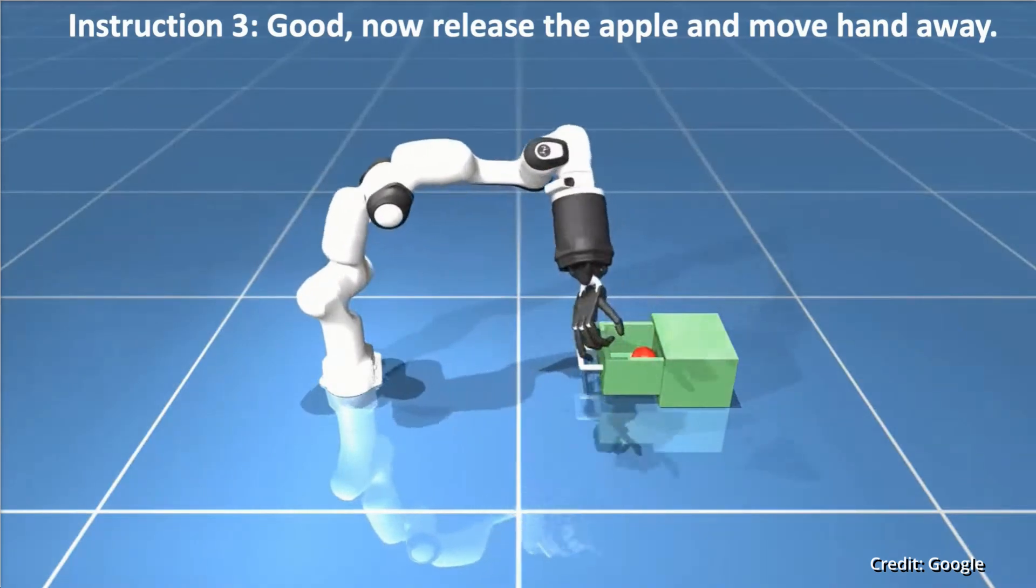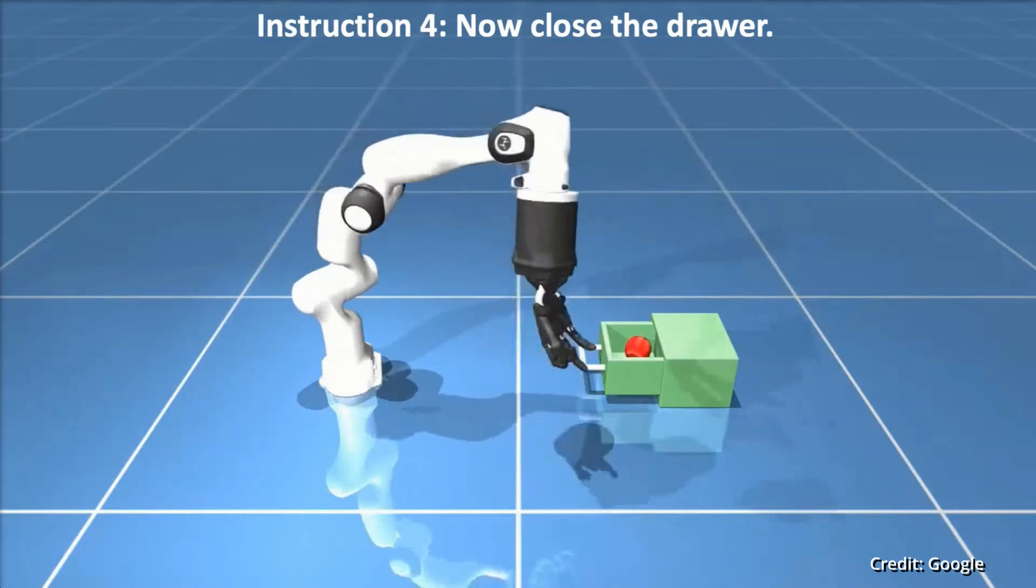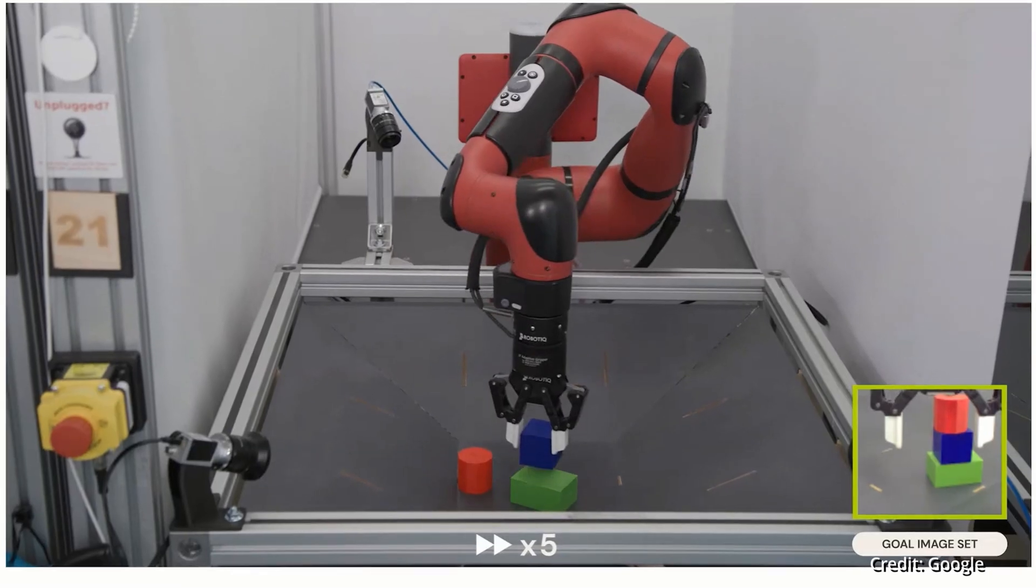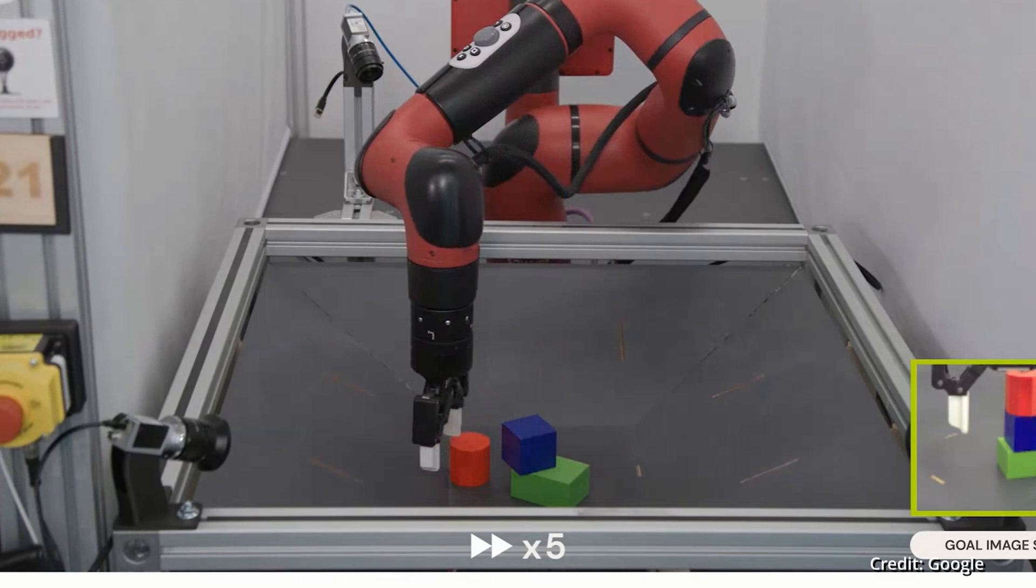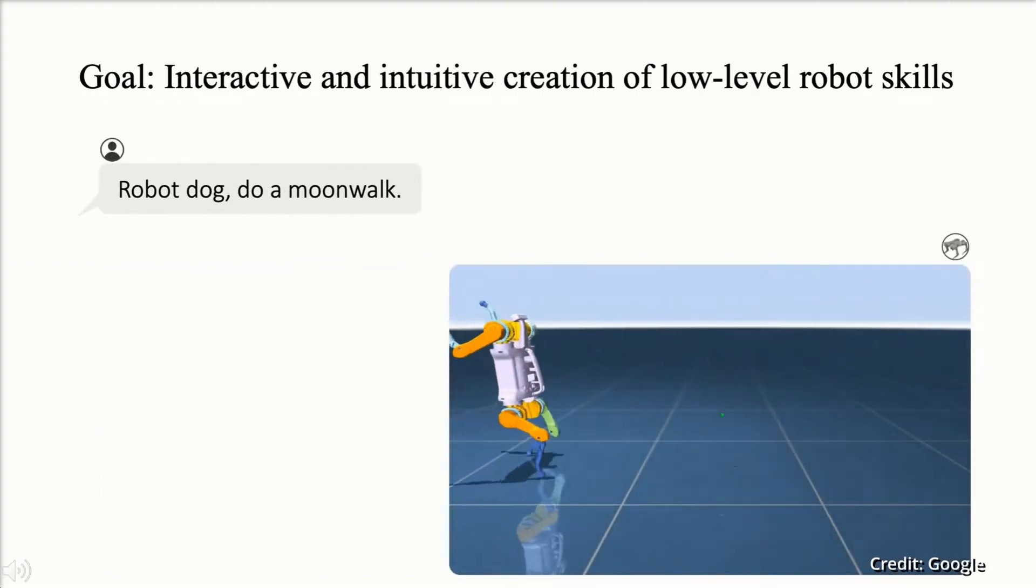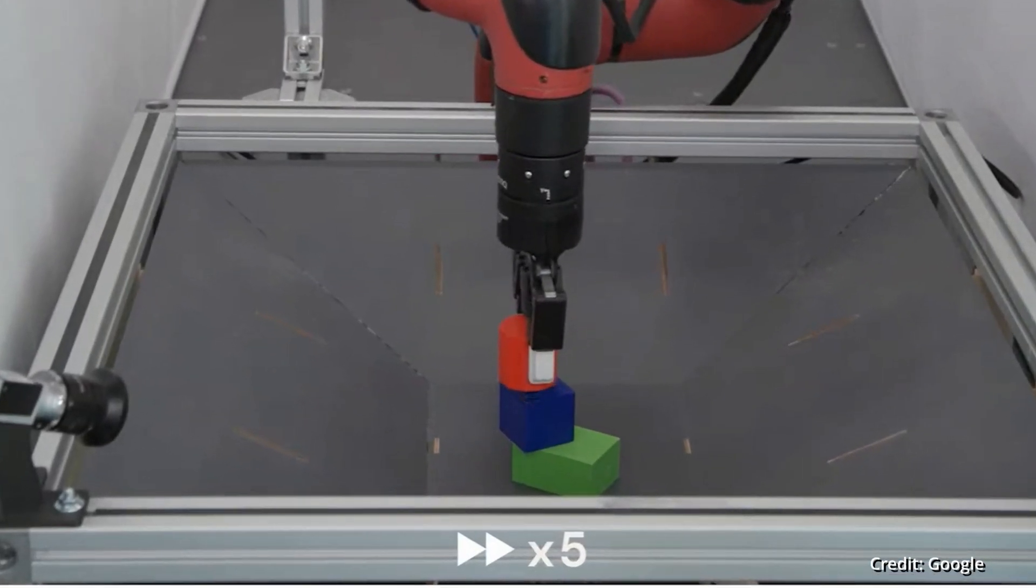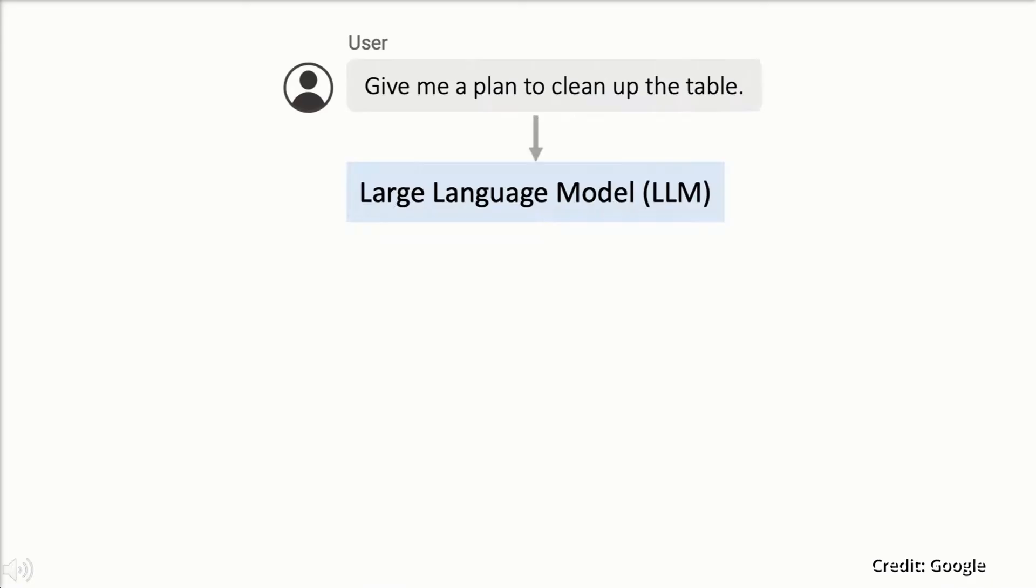What's truly fascinating about RoboCat's learning journey is the virtuous cycle of training it embarks on. With each new task it learns, RoboCat becomes more adept at learning additional new tasks. This pattern mirrors the way humans deepen their learning and skill set as they gain more experience in a domain. It's this human-like learning trajectory that sets RoboCat apart.